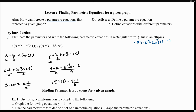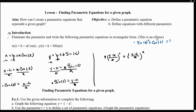Now that we have properly solved for sine and cosine, we can use this identity. We know that sine squared plus cosine squared equals 1. Sine is y minus k over b, so we have (y minus k over b) squared plus cosine squared. Cosine is x minus h over a, so we have (x minus h over a) squared equals 1. Notice what kind of equation this is — if we were to graph this, this is actually the standard form of an ellipse.